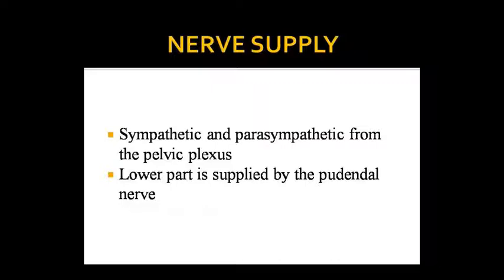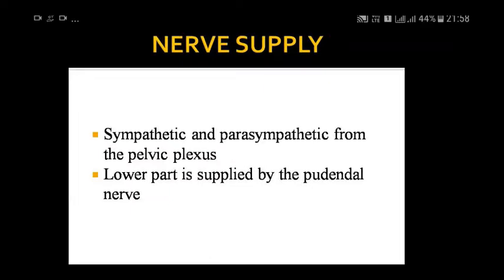The lower part of the vagina is supplied by the pudendal nerve, and the sympathetic nerve supply comes from the pelvic plexus. This completes the first internal genital organ — the vagina. In the next class we will study the uterus and the remaining portions of the internal genital organs.